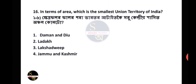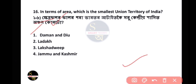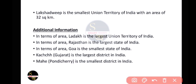Question number 16: In terms of area, which is the smallest union territory of India? The answer is Lakshadweep. Lakshadweep has an area of only 32 square kilometers. The largest union territory by area is Ladakh. The smallest state is Goa, and the largest state is Rajasthan. The largest district is Kutch in Gujarat.